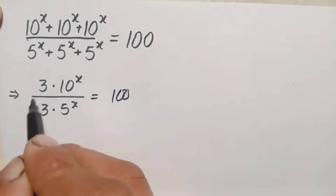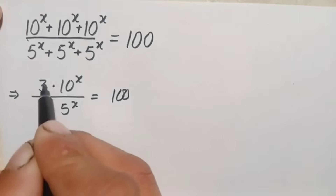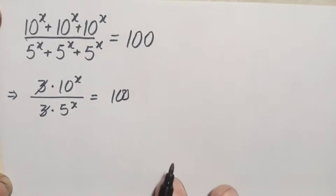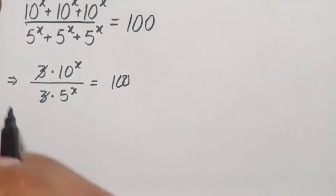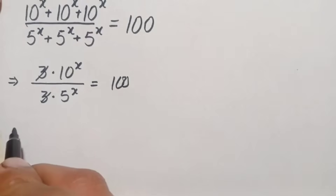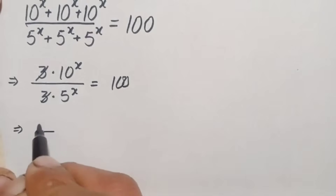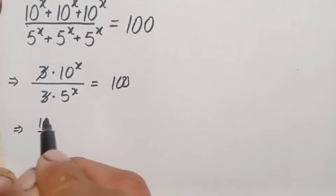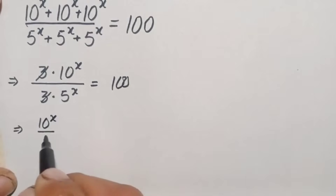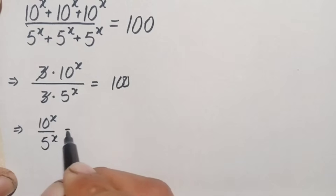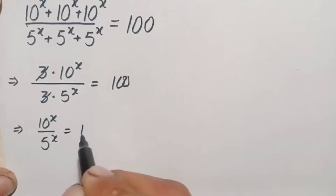Here there is three in the numerator and denominator, so this three will be cancelled with three. This will become 10 raised to power x divided by 5 raised to power x, is equal to 100.